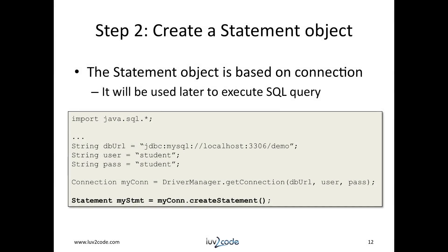Now that we have a valid connection, we can move on to step two: creating a statement object. In order to create a statement, you use myCon.createStatement(), and that will return a statement object. We'll use this later on when we're ready to execute our SQL query.